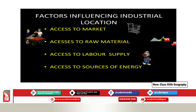The next factor is access to raw material. Raw material is a fundamental need of an industry. Raw materials like coal, iron, cotton, sugarcane, and jute lose a lot of their weight during processing. So industries are normally located in places where raw materials are easily available. For example, the Tata Steel Industry is located very close to its source of raw material.